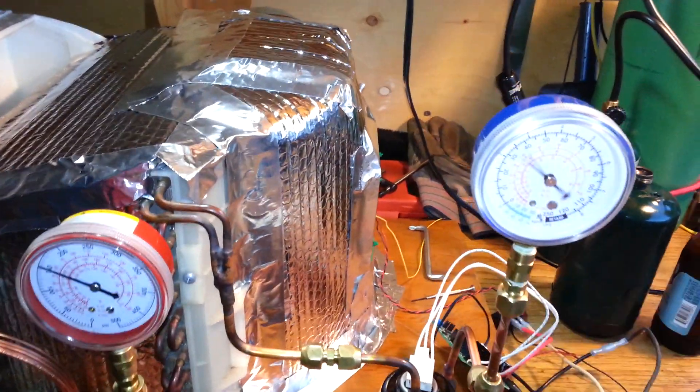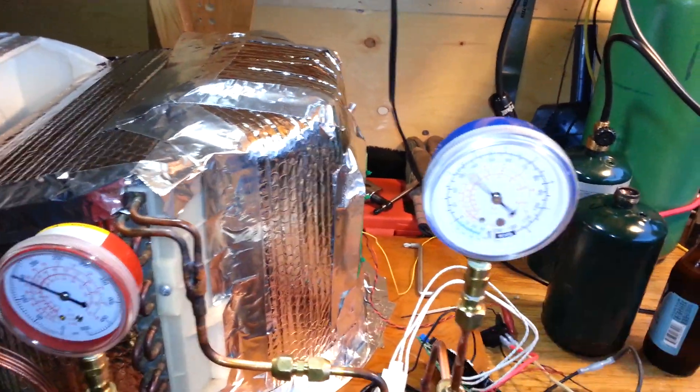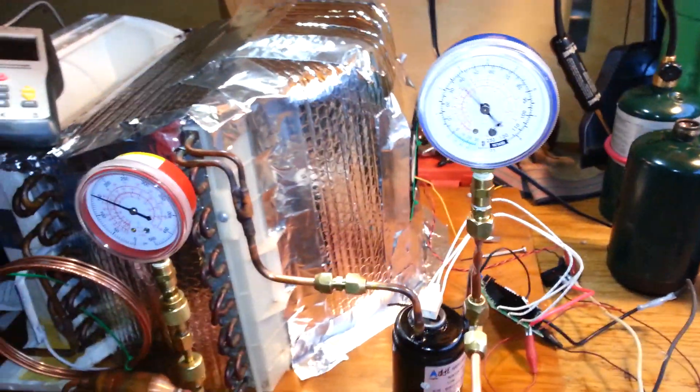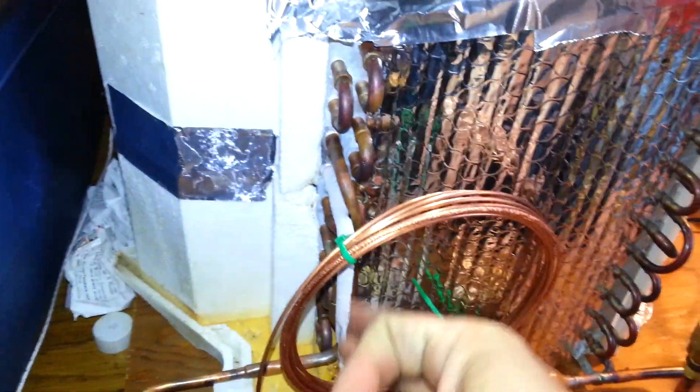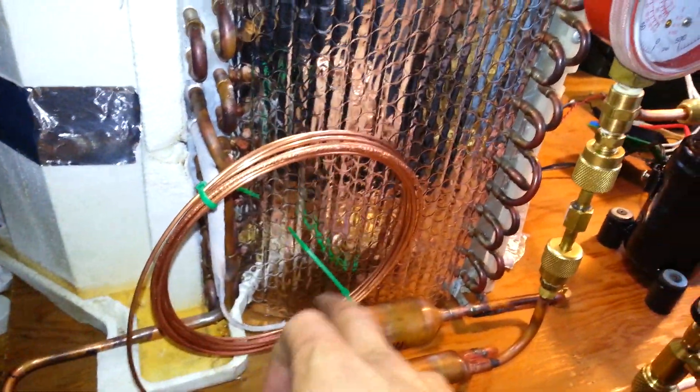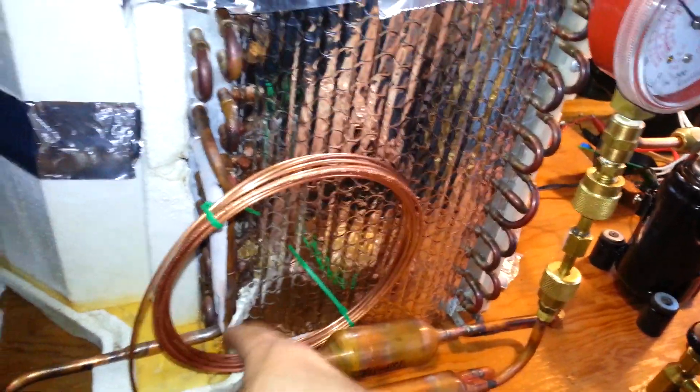Right now we're at about 35 psi, which associates to somewhere around 14, 15 degrees Fahrenheit. So it's way too cold. You can see it's frosted up right after the cap tube there. And it's condensing across the cap tube and it's frosting up.